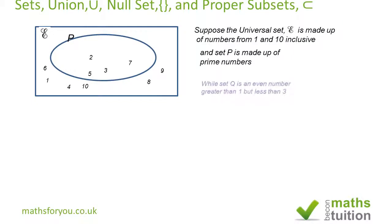We also have set Q, which contains numbers greater than 1 and less than 3. The only number greater than 1 and less than 3 is 2, and 2 is firmly in the P set.